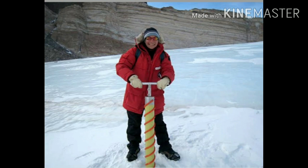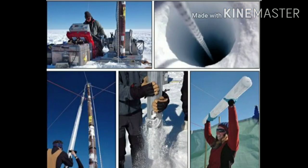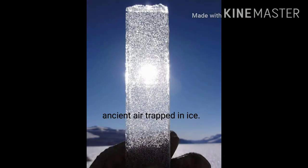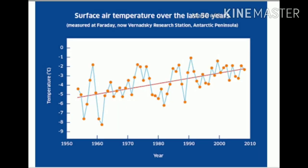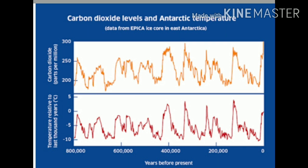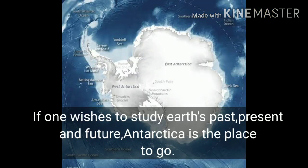Antarctica's ice is very old and created in layers. The deeper you go, the older the ice. If we drill into Antarctic ice, it provides a record of atmospheric carbon dioxide from when the ice was deposited. When the ice was deposited, there will be bubbles in it, and when the ice is released, carbon dioxide can be extracted from it. By studying Antarctic ice, we can know about past temperatures. According to the author, if one wishes to study and analyze earth's past, present, and future, Antarctica is the place to go.